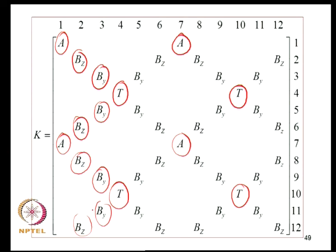We can understand the structure of this 12×12 matrix with axial deformation, twisting, and in-plane and out-of-plane bending occupying their respective positions. We will conclude this lecture here. In the next lecture, we will populate the matrix with correct numerical values and proceed with assembling, coordinate transformations, and analysis of 3D structures.